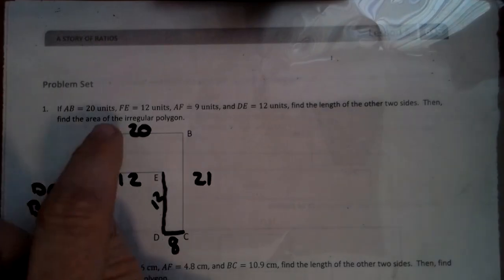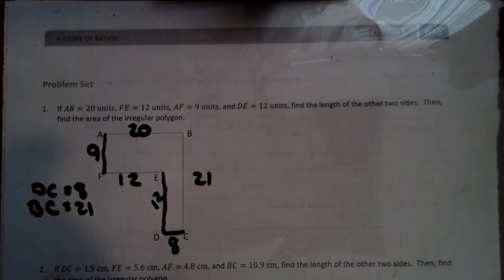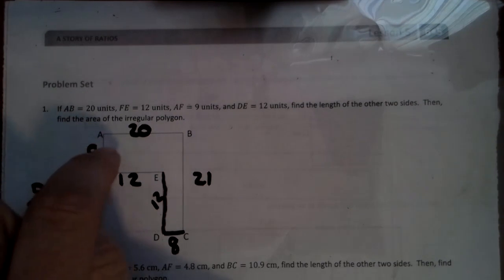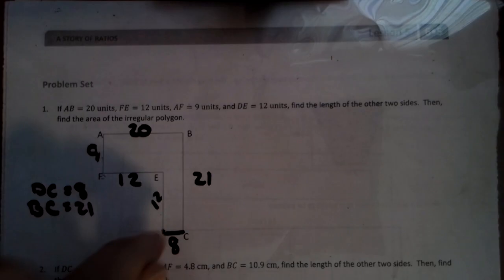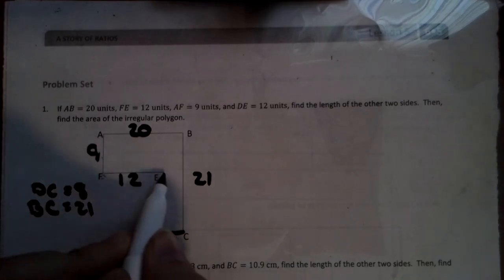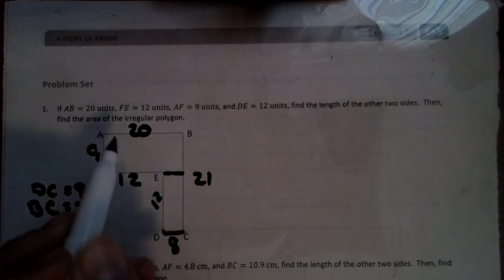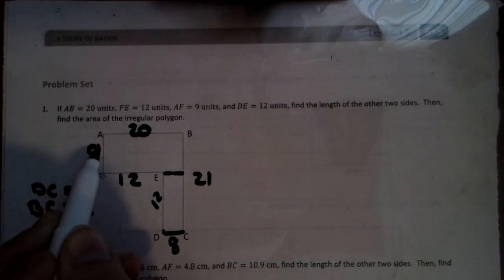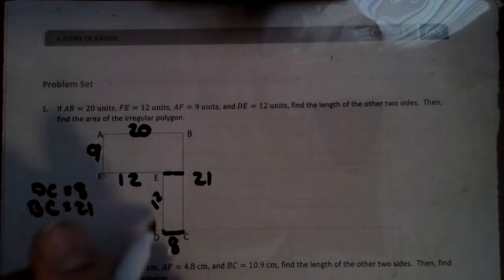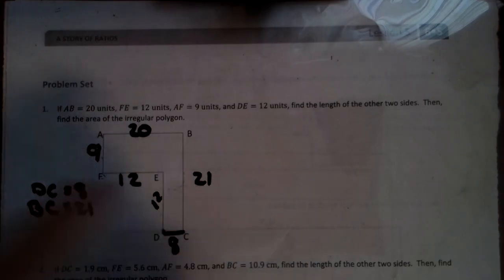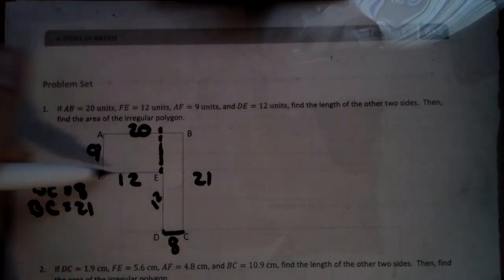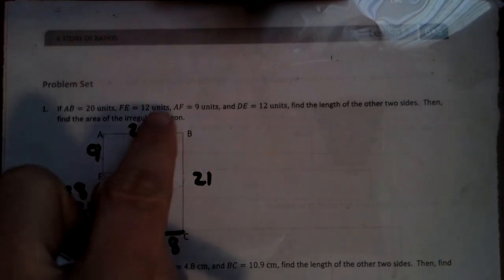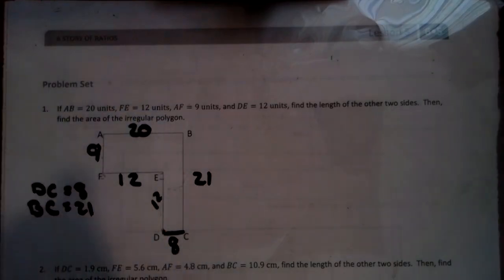Now, that's just an easy way to remember it. So now we have to find the area, and there's a couple different ways we can do this. We can take it and cut it here, and we could do a 20 by 9 and an 8 by 12, or we can cut it here and do an 8 by 21 and a 12 by 9. Either way you do it, as long as you do the math right, you'll get the same answer.